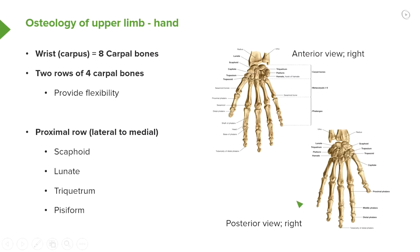Let's look at the carpals first of all. There are eight carpal bones, and these eight carpal bones form two rows, with each row having four carpal bones in them. This arrangement, this high number of bones, allows greater flexibility. So there's a high level of flexibility within the wrist joint, allowing great movement of the wrist to assume numerous positions.